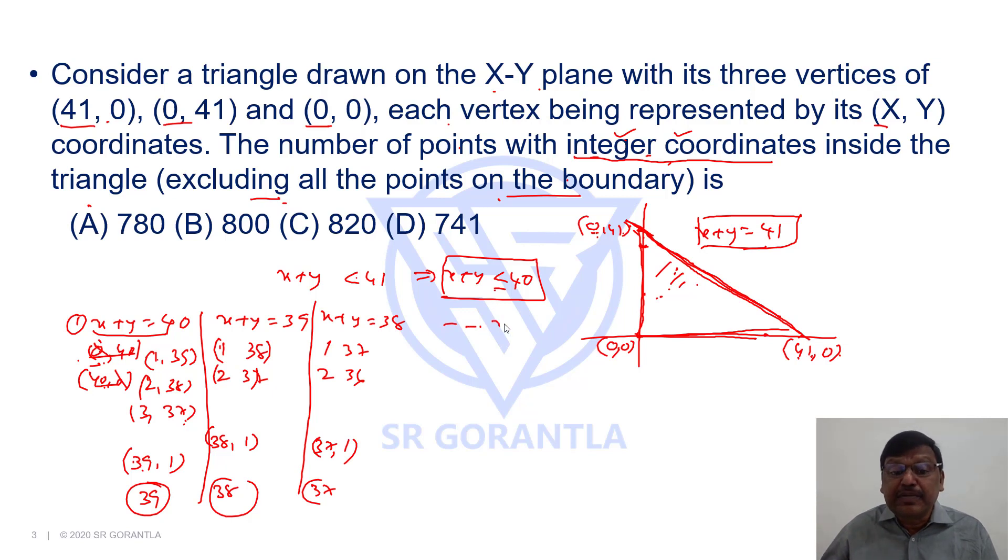Like that when I write x + y = 2, how many possibilities are there? x + y = 2 means there is only one possibility: (1, 1). You can't have any other possibility.